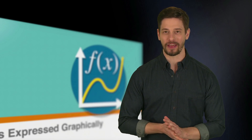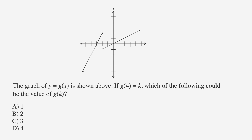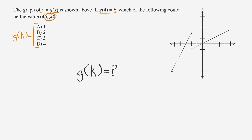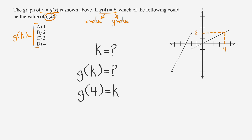Let's check out another SAT problem together. The graph of y = g(x) is shown above. If g(4) = k, which of the following could be the value of g(k)? Let's underline the facts, circle the key words, and label the answer choices. We know that g(k) is the y value when x equals k. The problem tells us that k is the value of y when x equals 4. When x equals 4, y equals 2 — so k equals 2.